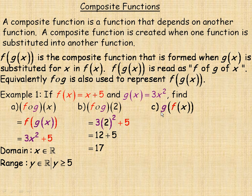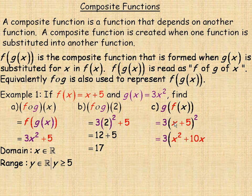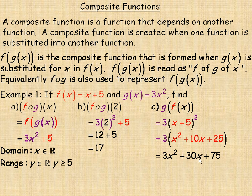In example c, we find g of f of x, meaning we substitute the f function into the g function. We substitute x plus 5 into g of x in place of x, so g is 3 times the quantity (x plus 5) squared. Squaring the binomial gives x squared plus 10x plus 25, and multiplying through by 3 gives g of f of x equals 3x squared plus 30x plus 75.